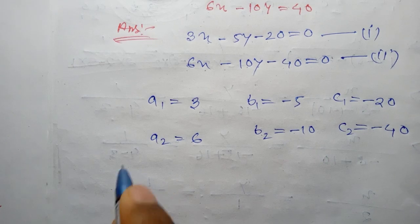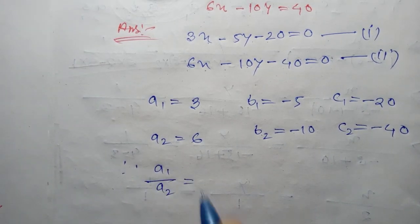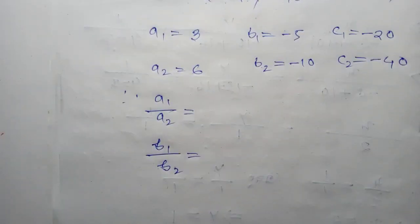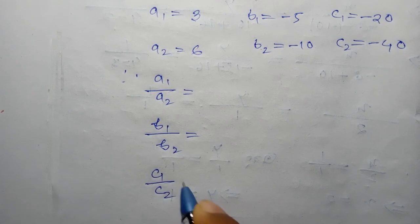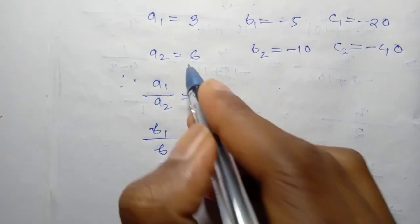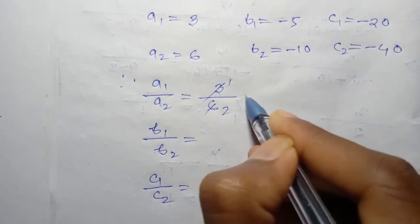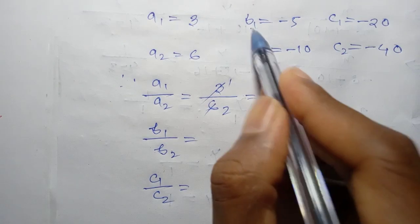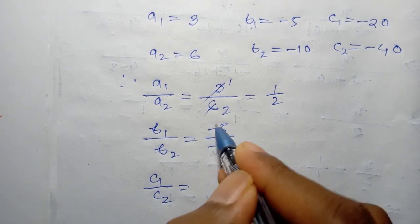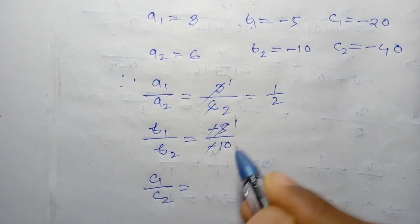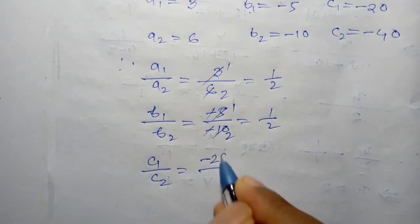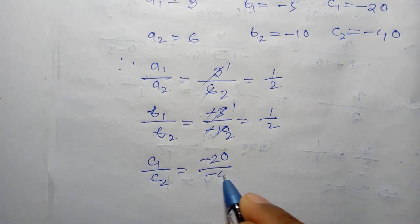Now we check: a1 divide a2, b1 divide b2, and c1 divide c2. We get a1 by a2 equals 3 by 6, which is 1 by 2. Then b1 by b2 equals minus 5 by minus 10, which is also 1 by 2. And c1 by c2 equals minus 20 by minus 40, which is also 1 by 2.